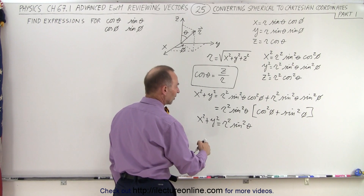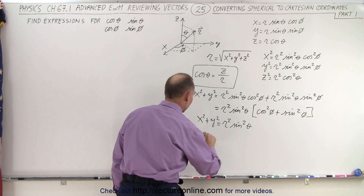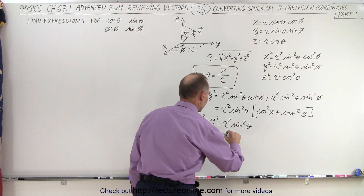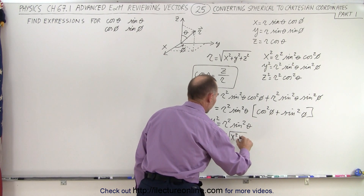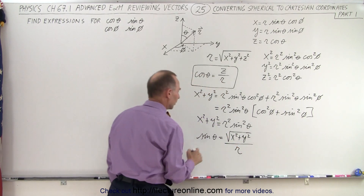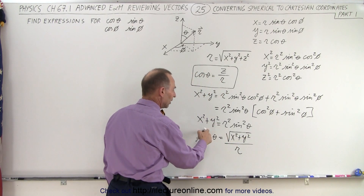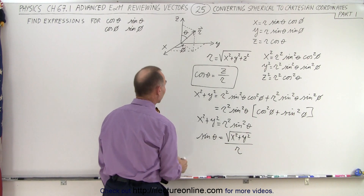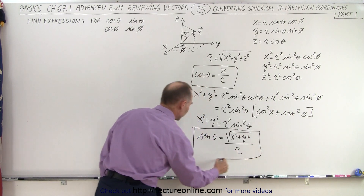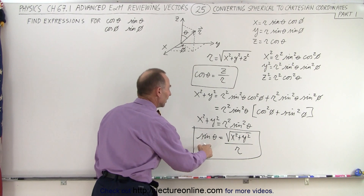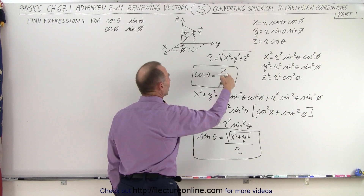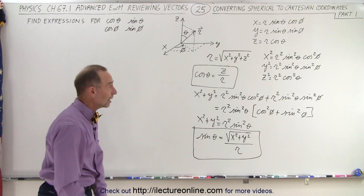Taking the square root of both sides and solving for sine of theta, we get that the sine of theta equals the square root of x squared plus y squared, divided by r — because we divide both sides by r and take the square root. So we now have expressions for sine of theta in terms of x, y, and r, and cosine of theta in terms of z and r. We're halfway there.